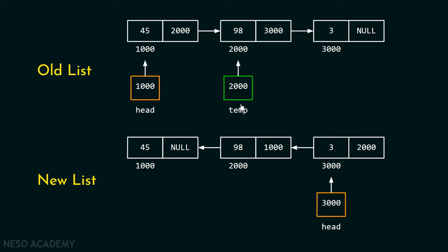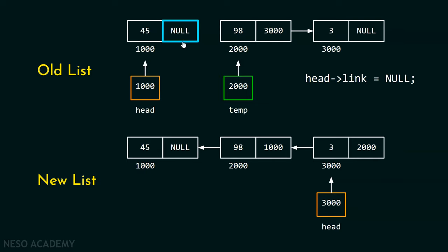We introduce a temp pointer pointing to the second node of this list, while head points to the first node. Now we can easily update the link part of the first node to null using the line: head.link = null. Because of the temp pointer, we never lose the reference to the second node.